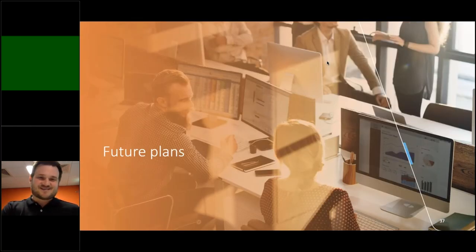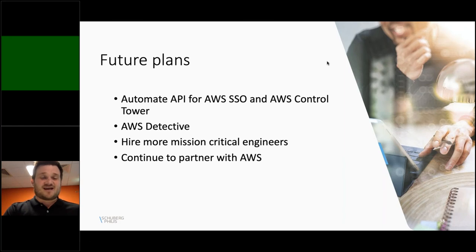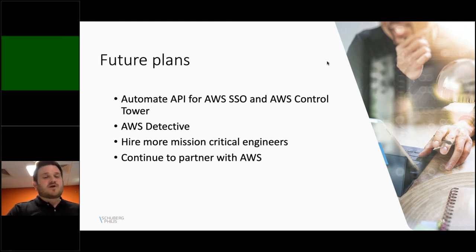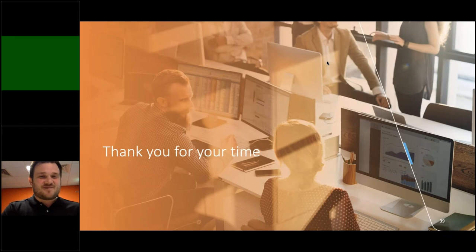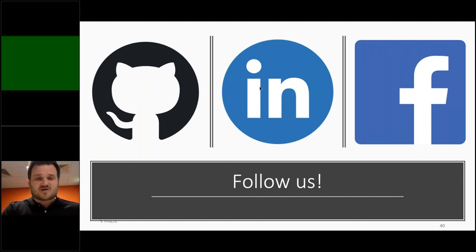For future plans, it would be nice to automate an API for SSO and Control Tower. AWS Detective was recently launched and we'd really like to start using it. We're passionate about mission-critical engineers who love AWS, and we want to continue to partner with Amazon as much as possible. Thanks for all of your time — I've really enjoyed this and look forward to presenting for you again. I really hope you'll follow us on one of our three channels. I thought GitHub was the most important so you could see our code. Thank you for your time.